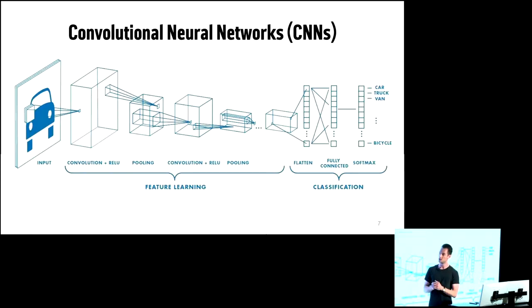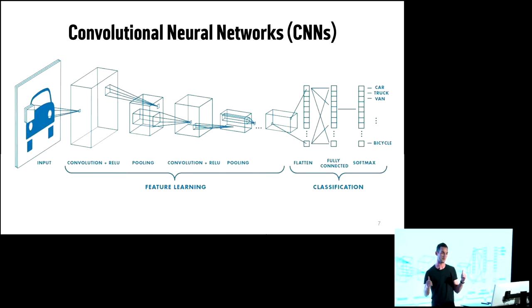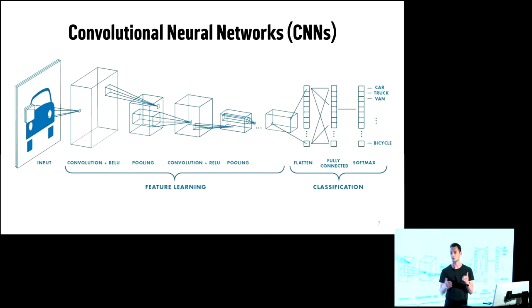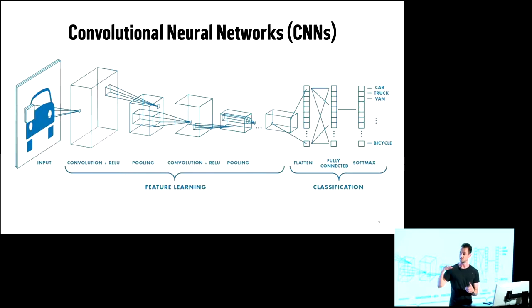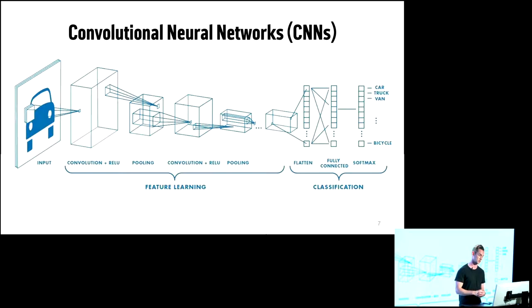With that high-level view of what a neural network is, what is a convolutional neural network and how can we train it? A convolutional neural network involves a series of what are called convolutions. CNNs are really effective at image recognition and classification problems, which is the problem we'll be working on.